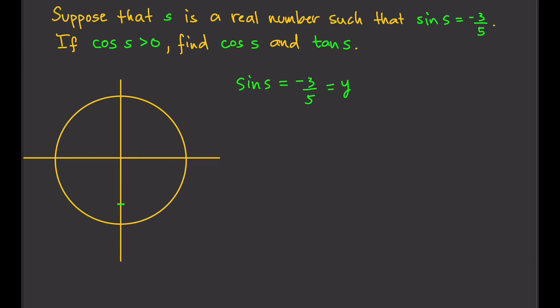That gives us two possible points for s on the unit circle. We don't know which point it is, so we're going to need the second piece of information: cosine s is greater than zero. Remember, cosine s is equal to the x-coordinate, so x has to be greater than zero. Which of these points has x greater than zero?